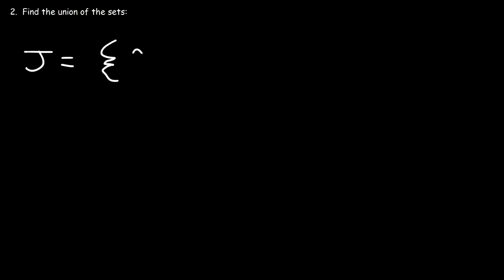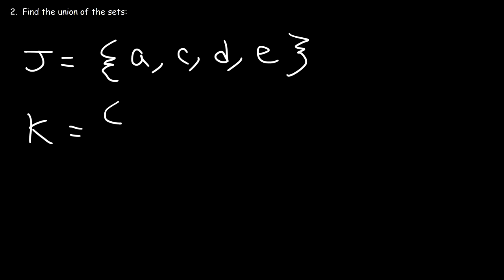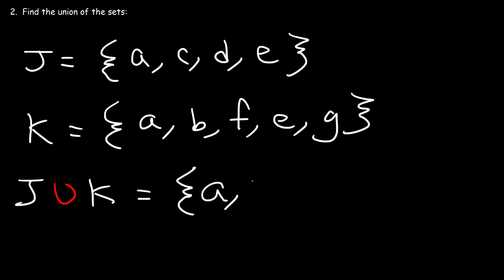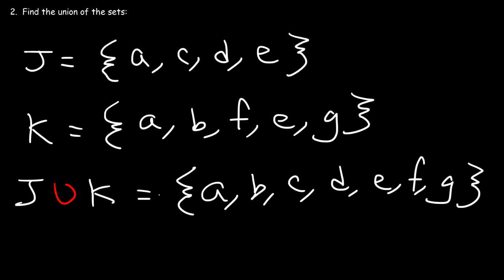Here's another example. Let's say that set J contains the letters A, C, D, and E, and that set K contains the letters A, B, F, E, and G. Go ahead and determine the union between J and K. All we need to do is write all the letters. So we have A, B, C, D, E, F, and G. And that's it for that question.